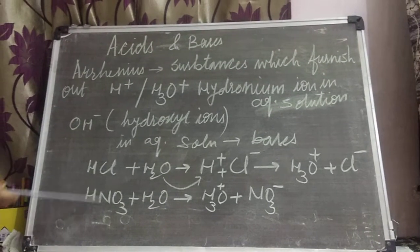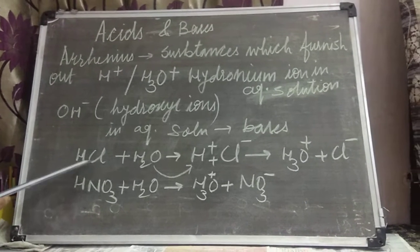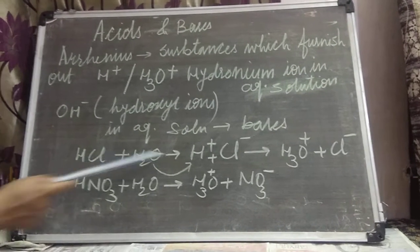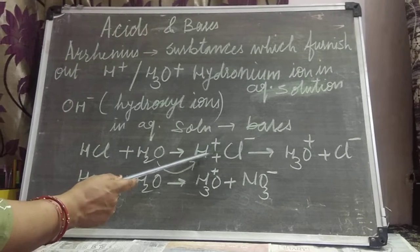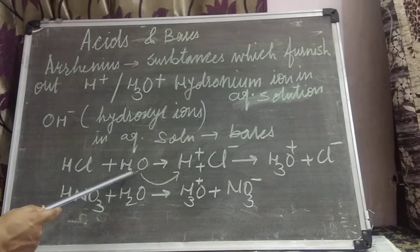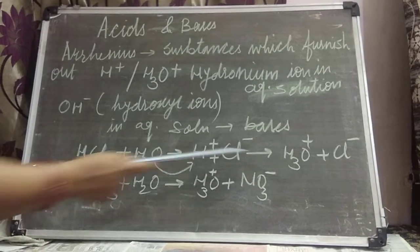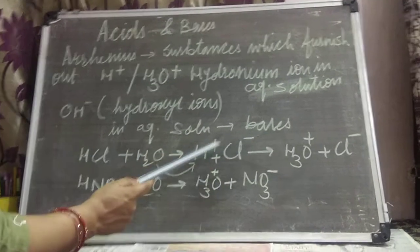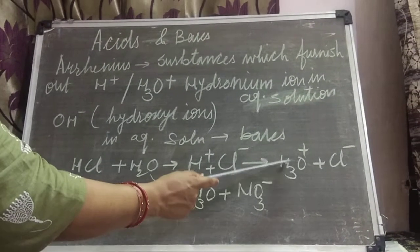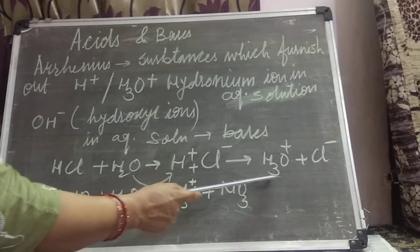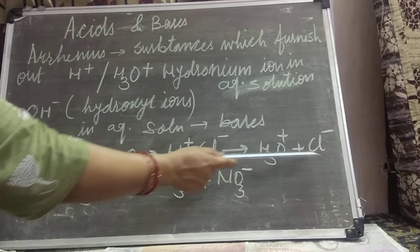Taking examples: HCl when dissolved in water will first split into H⁺ and Cl⁻. This H⁺ actually combines with water H₂O, and H⁺ getting added into it gives H₃O⁺ — hydronium ion — and Cl⁻. So HCl dissociates into H₃O⁺ and Cl⁻ in aqueous solution.